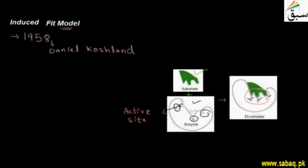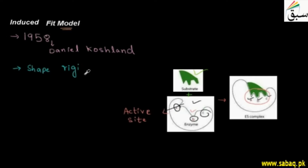After the Induced Fit Model was designed, the scientist stated that the enzyme's active site region is not rigid — the shape is not rigid. It means the shape can change. This is because the enzyme is protein in nature. The enzyme can modify its active site to fit the substrate.